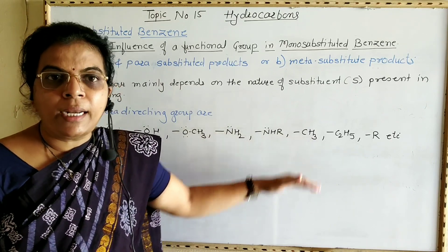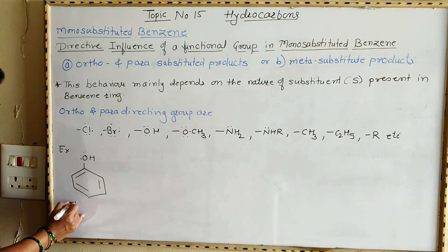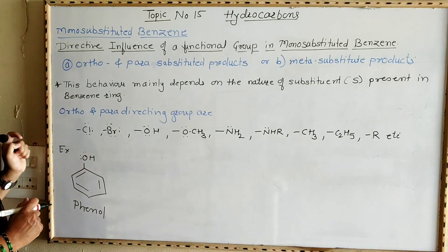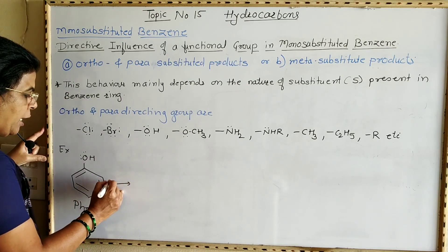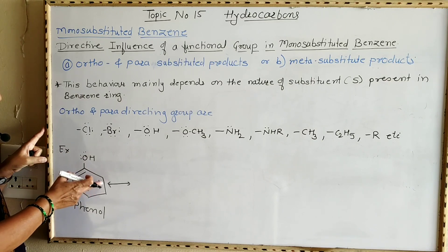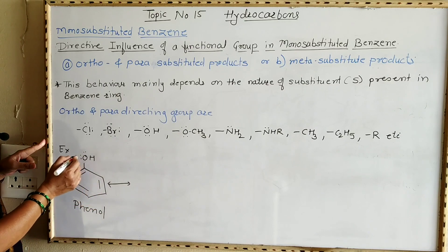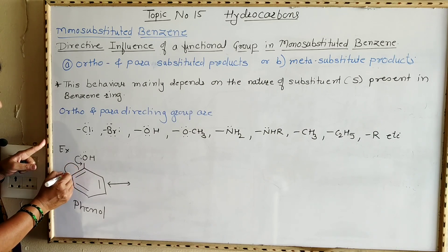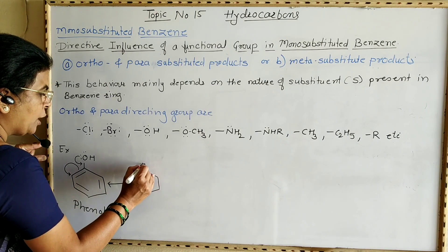We can understand how these groups are ortho and para directing using the example of phenol. Phenol is a monosubstituted benzene possessing a hydroxy group. The OH group on oxygen has a lone pair of electrons. By resonance, these electron pairs are conjugated with the alternating double and single bonds of the benzene ring, and the electrons can resonate into the ring, generating negative charge at the ortho position.